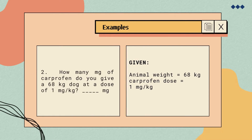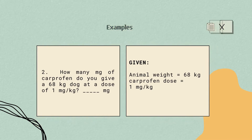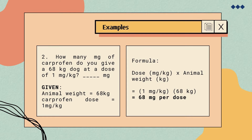Number 2: how many milligrams of carprofen do you give a 68-kilogram dog at a dose of 1 milligram per kilogram? The given are 68 kg for the animal weight and 1 mg/kg for the dose of carprofen. We multiply the animal weight by the dose: 68 kg times 1 mg/kg equals 68 milligrams per dose. This means 68 milligrams of carprofen is needed by a 68-kilogram dog.